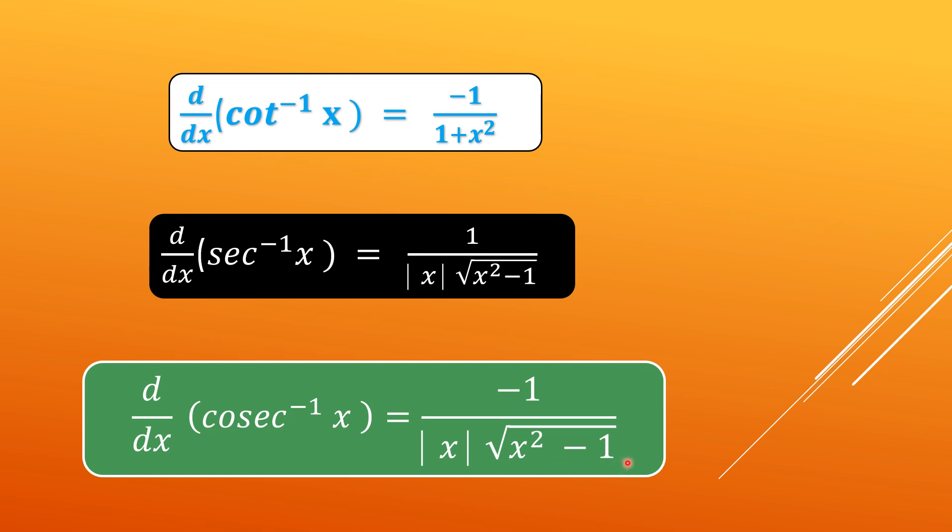So a very easy way to memorize them is the difference between secant inverse and cosec inverse x is just that of a minus sign. Similarly, between the cot and tan inverse also and so is between sine and cos.